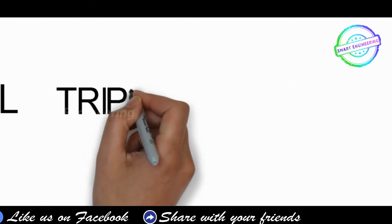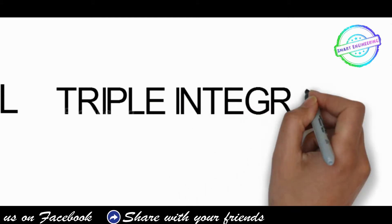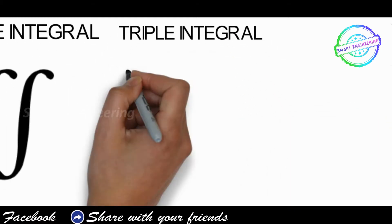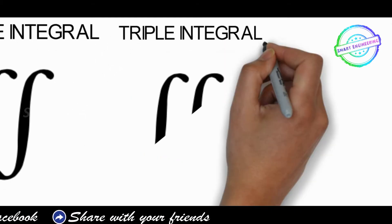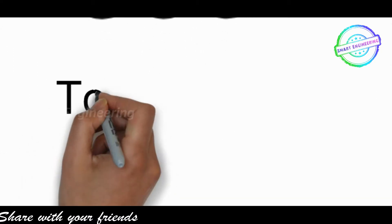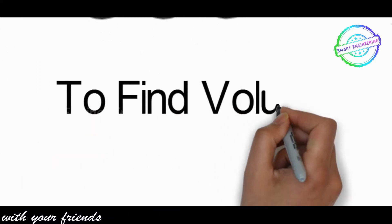The triple integral represents a three-dimensional closed path using x, y, z axes to place the object. Volume corresponds to the triple integral, while surface area corresponds to the double integral.